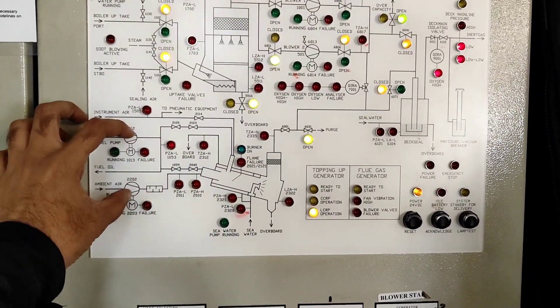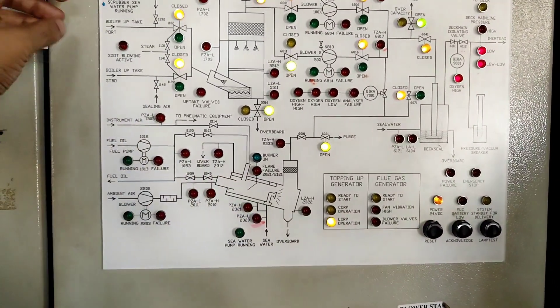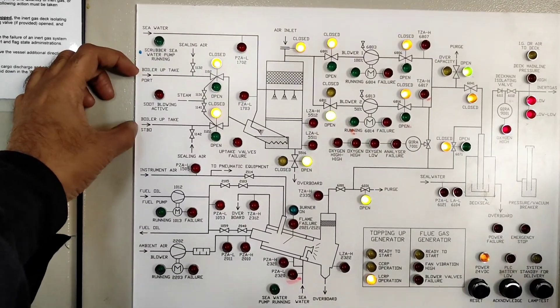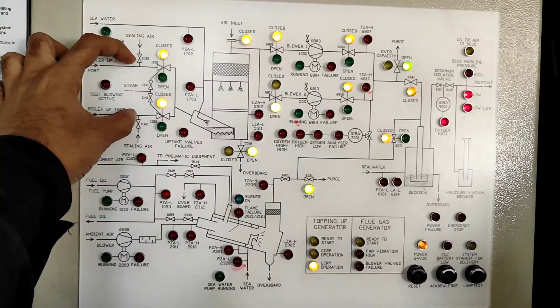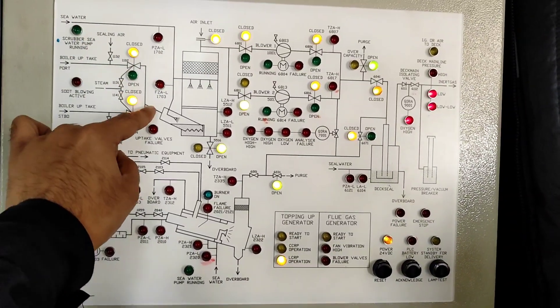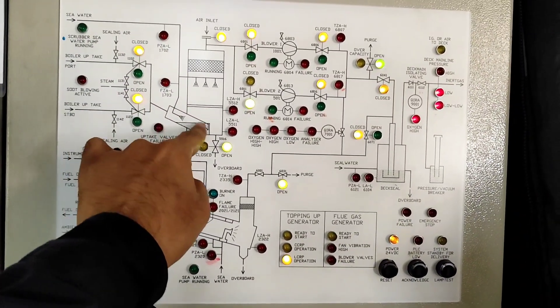So these two pumps are for IGG and this is coming from boiler uptake. So exhaust which is going out from boiler is going here and then it is going to the scrubber for washing and cleaning.